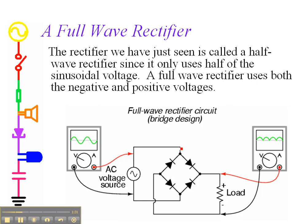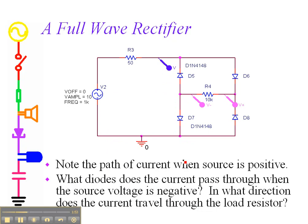A full-wave rectifier looks like this: if we have current flowing one way, it flows through the load and back through the diodes; if the current is flowing in the other direction, it flows through the load in exactly the same direction but goes through the diodes in the opposite direction. Here is the way a full-wave rectifier looks in PSpice. The current passing through the load always goes in exactly the same direction, therefore the voltage would always be plus-minus for this configuration.